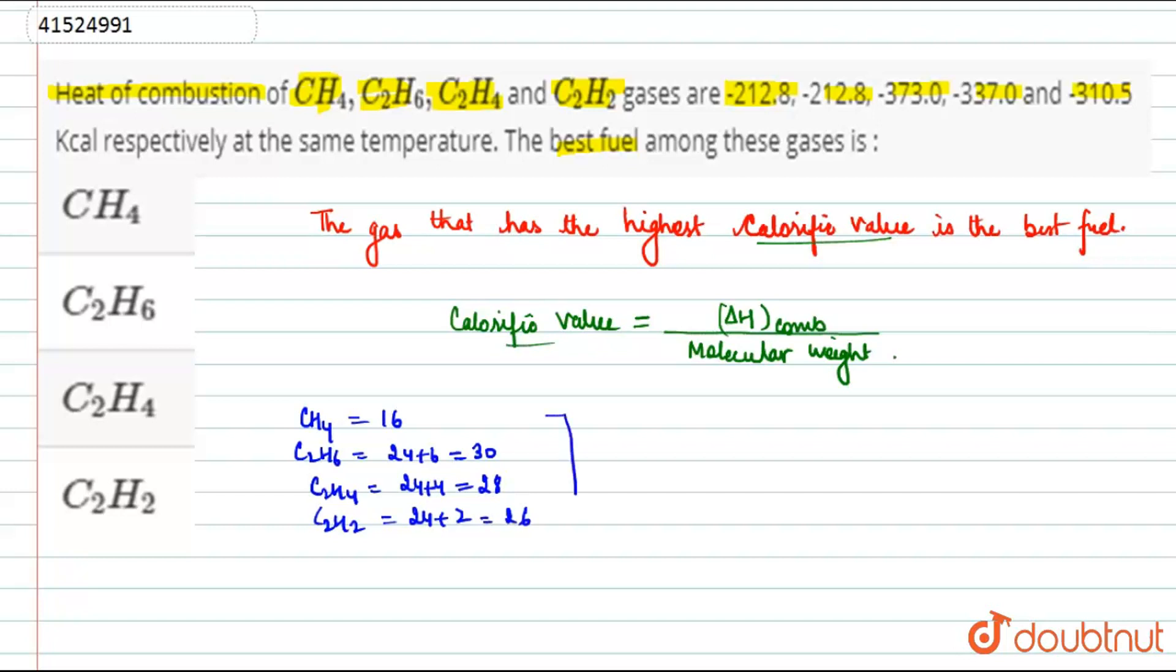So these are the four molecular weights, and the values of delta H of combustion are given. When we divide these values, we will get the calorific value. Since methane has the lowest molecular weight, the denominator will be less, so its calorific value will be more.